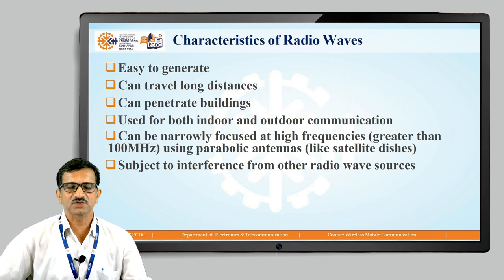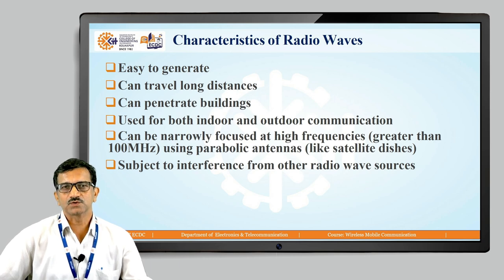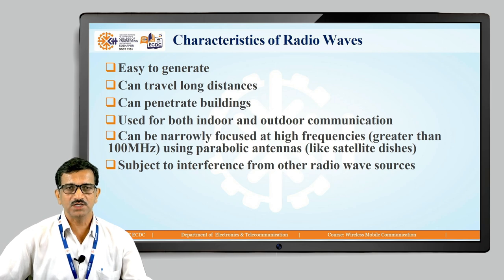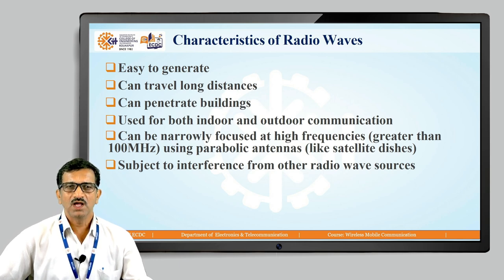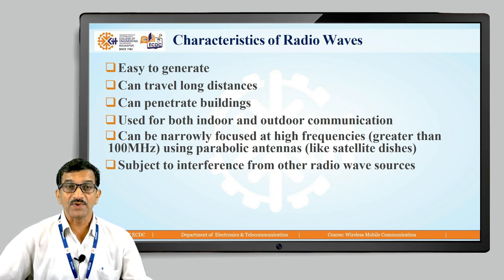For example, in satellite communication, whatever signal is transmitted from the satellite, we can receive it from Earth across 36,000 kilometers — so radio waves can travel long distances. They can also penetrate buildings; if FM is available and you are receiving from a mobile phone, it can be received indoors through walls.